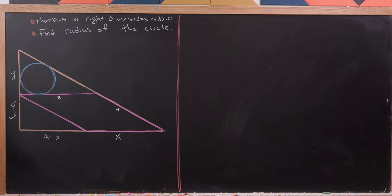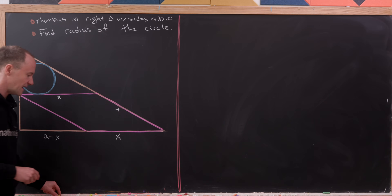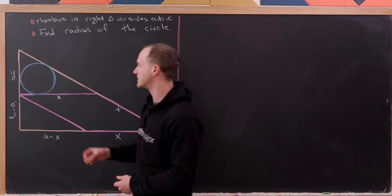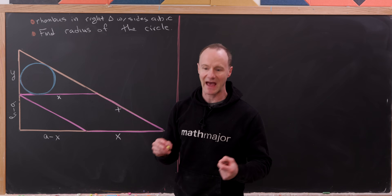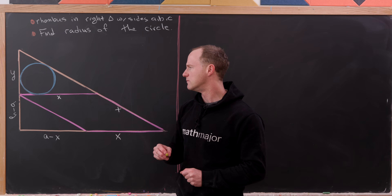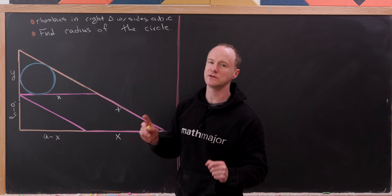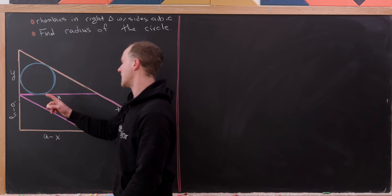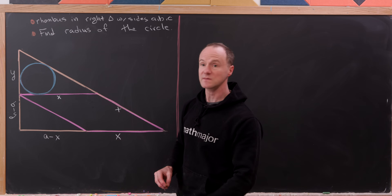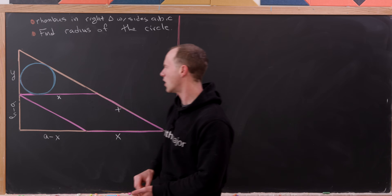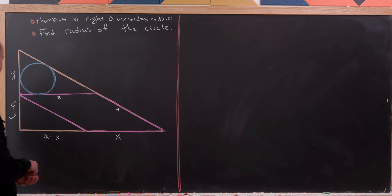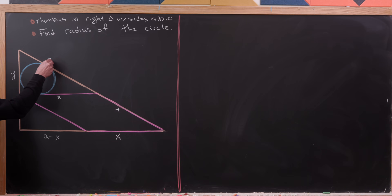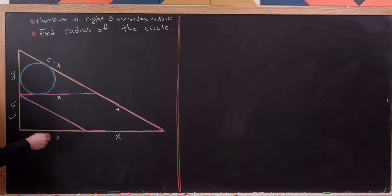Since the side along the hypotenuse is X, the remaining piece of the hypotenuse is C minus X. I'll start by calculating the radius of the inscribed circle in terms of X and Y first, because the notation will be cleaner than if we immediately substitute X and Y in terms of A, B, and C.